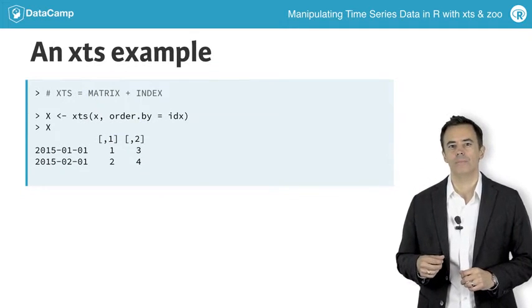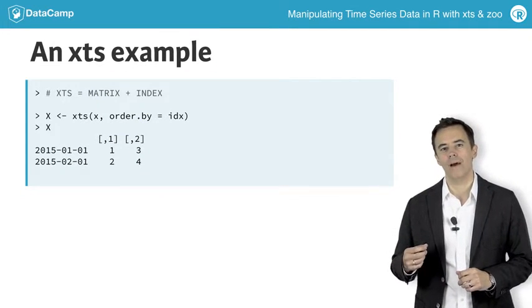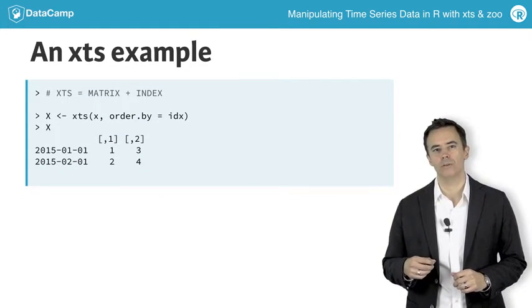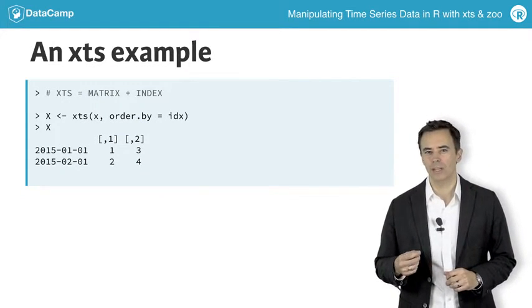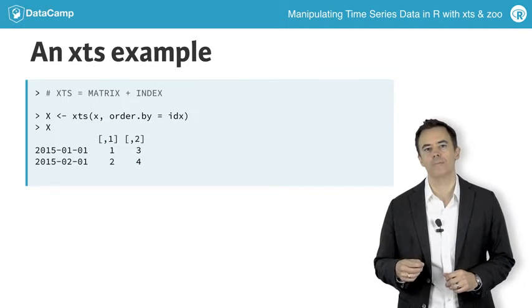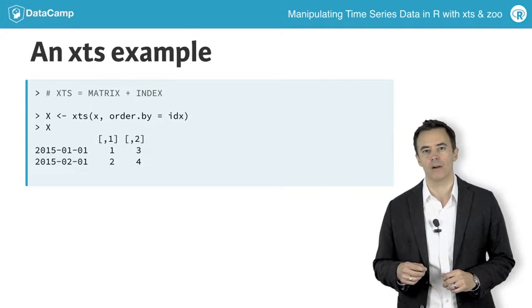Looking back to the example, you can see that we now have a matrix of values with dates on the left. They may look like row names, but remember, it's really our index.